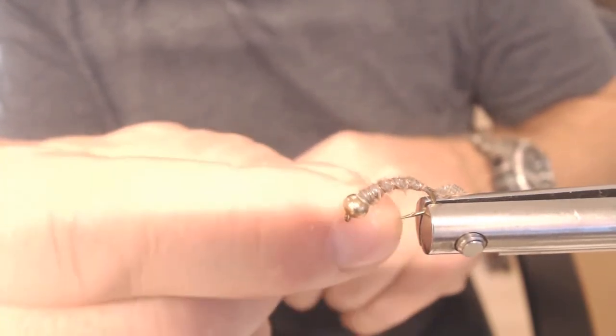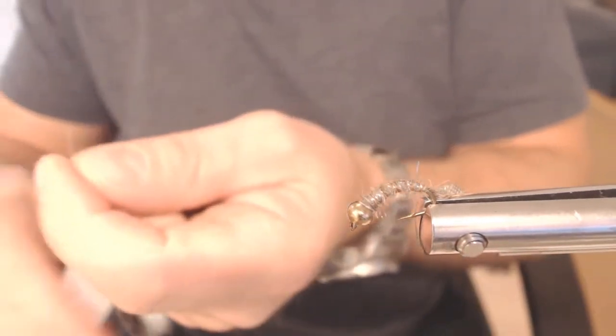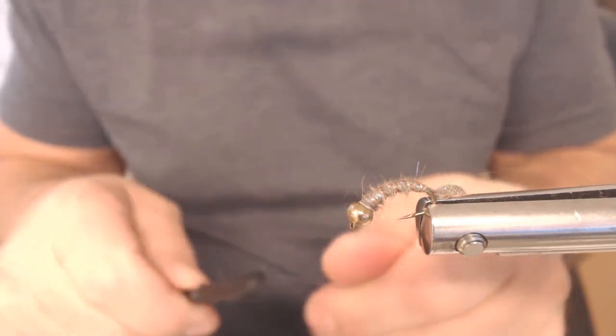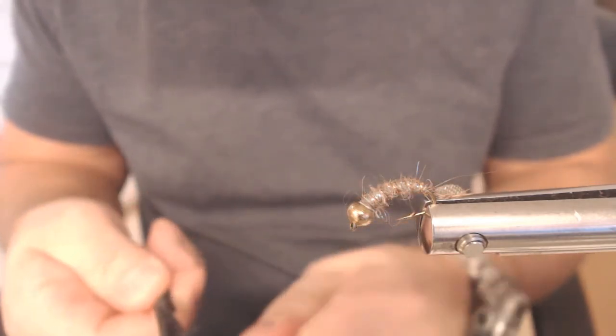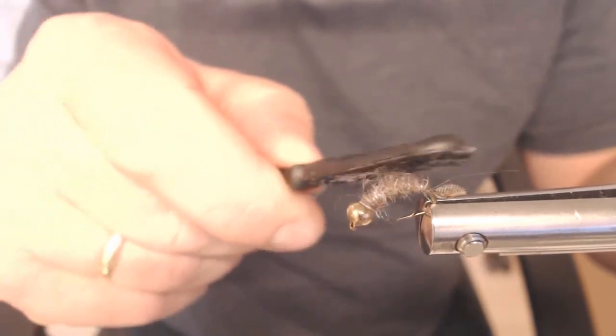Gjør en overslutning der. Sånn. Så klipper jeg da. Klipper av. (Make an overhand knot there. So. Then I cut. Cut off.)